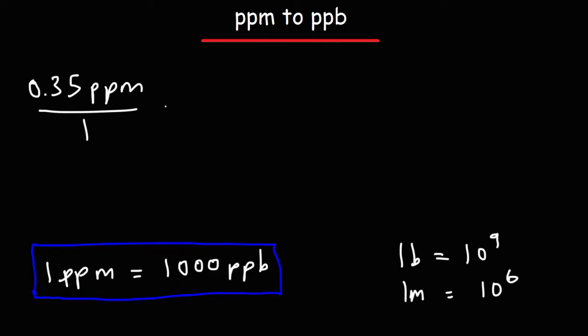So with that conversion factor, we can convert from ppm to ppb. We can say that 1 ppm is equal to 1,000 ppb, and thus these two units will cancel. So it's going to be 0.35 times 1,000, which is 350 parts per billion.